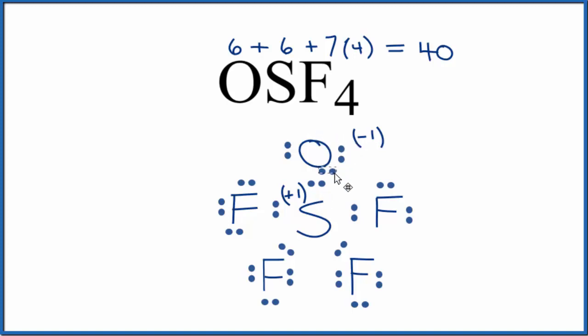So if we take this pair of electrons here and form a double bond, now we're still using the 40 valence electrons. The oxygen still has an octet. Everything's pretty much the same, except now we have a double bond. Sulfur has an extra pair of electrons, but it can have an expanded octet.